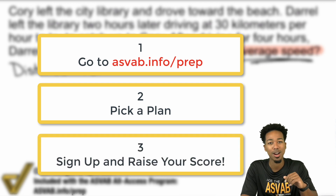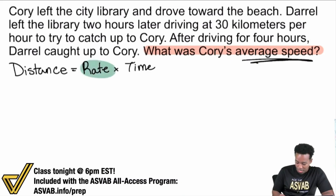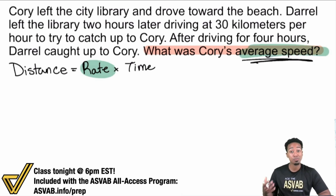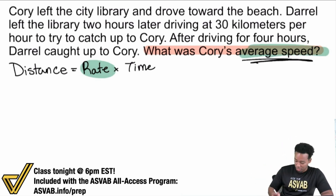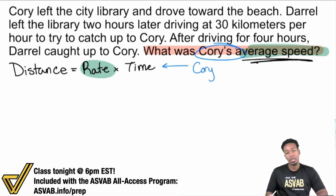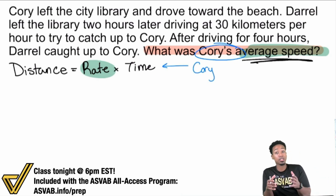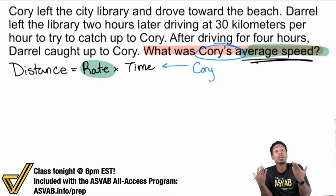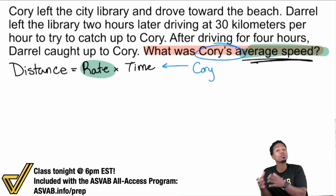We're looking for the rate. Average speed refers to rate — the rate at which you are traveling. And for who specifically? Be very careful — read the information. Corey. We want this for Corey. So this is the second phase now. First phase was: what is the question, what are we looking for? Step two, we're going to gather information to see what we can work with.